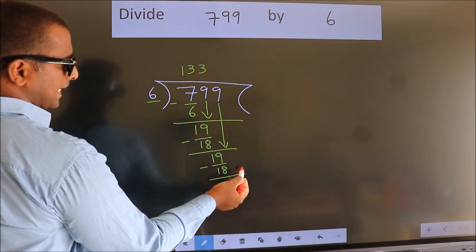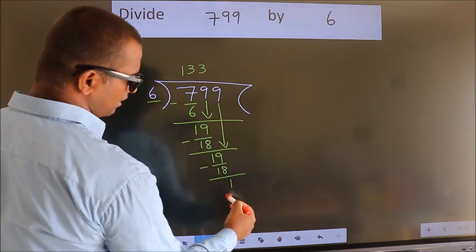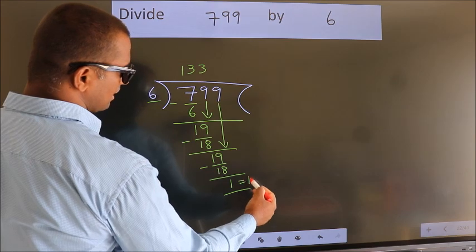No more numbers to bring down, so we stop here. This is our remainder. This is our quotient.